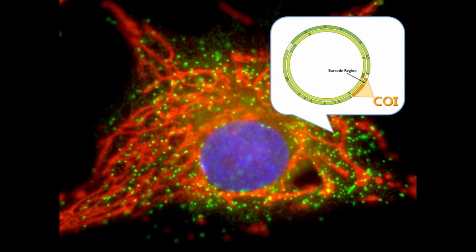DNA barcoding is based on a small region of a gene found on the mitochondria. DNA can be found in two places in an organism: in the cell nucleus or in the mitochondria. The one used for DNA barcoding is from the mitochondria. This is a very small, tiny part of the organism that we are using to identify it.